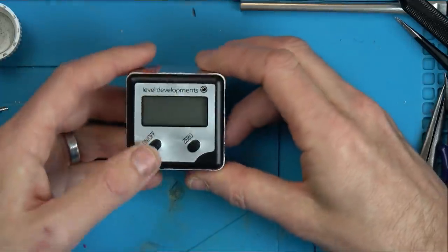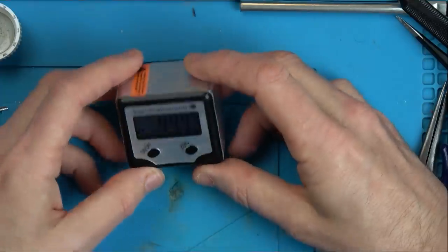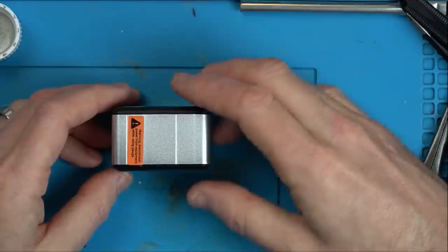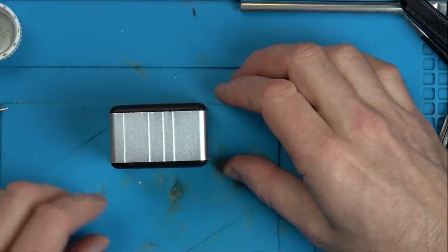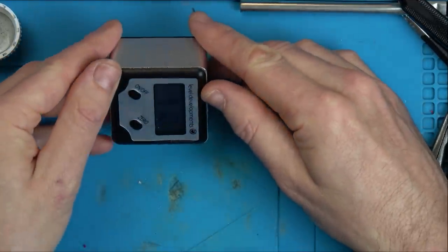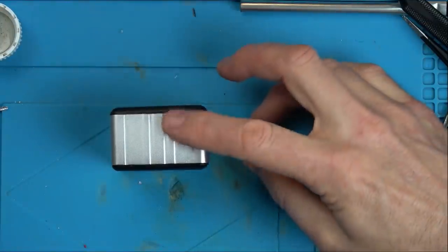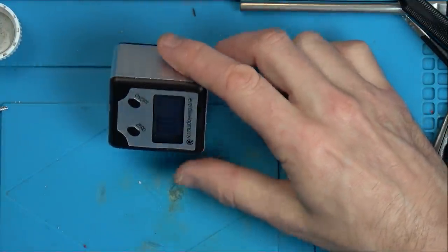So it's all back together now and the on button is working and when I press zero it is zeroing. So if I turn it to here now it's reading around about 90 degrees and if I hit the zero it reads zero. So perfect. Well let's do some real life testing.